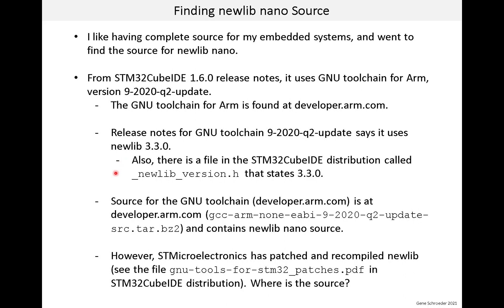Where to get the source? It seemed to me that the best place would be developer.arm.com, and you can get a source distribution for the toolchain — that source distribution contains NewLib Nano source. But here is a small problem: STMicroelectronics has patched and rebuilt NewLib. Fortunately, they document what they did in a PDF that is in the IDE installation, but they didn't provide the source. STMicroelectronics should be publishing their updates as this is open source, and I have not found the modified source code.